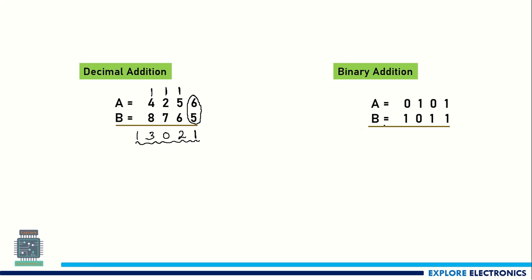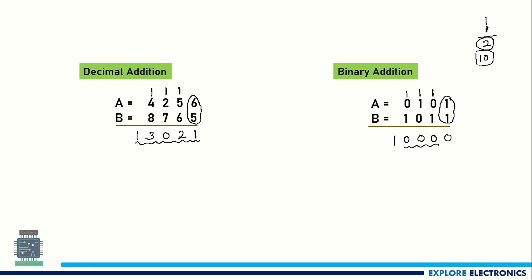Similarly, binary addition starts from the rightmost position. If we add 1 plus 1, in decimal we get 2, which is represented as 10 in binary. So we write 0 and carry 1 to the next bit. Adding three bits: 1 plus 0 is 1, then 1 plus 1 is 2 again — write 0 and carry 1. Again 1 plus 1 gives 0 with carry 1. The final extra bit is the carry-out. This is how binary addition is done.